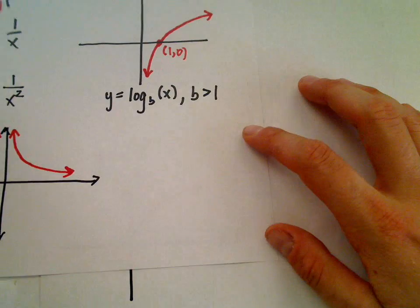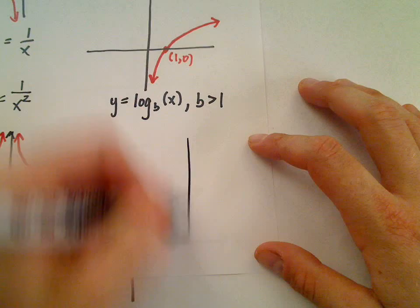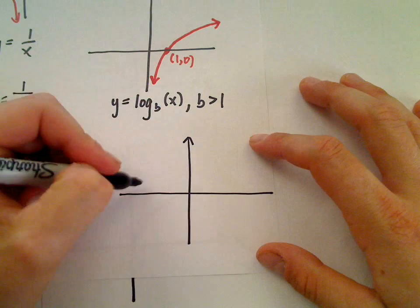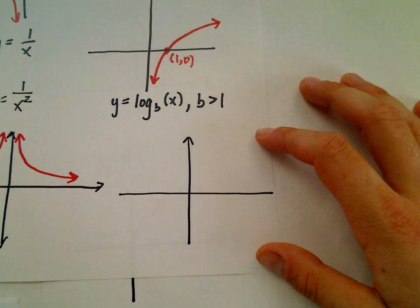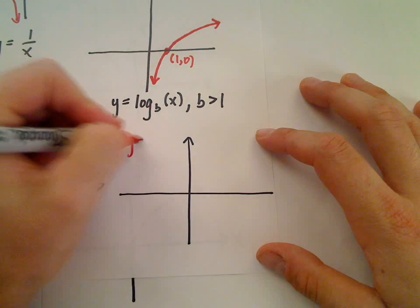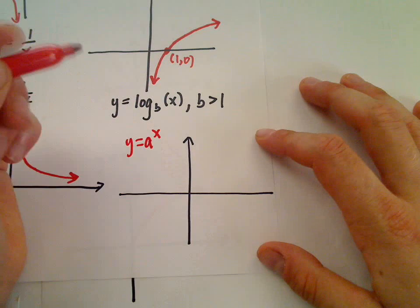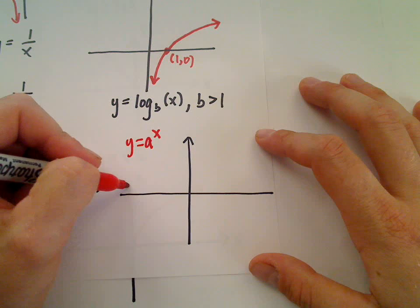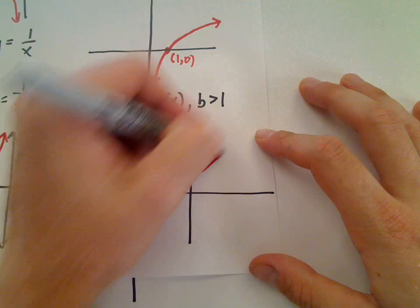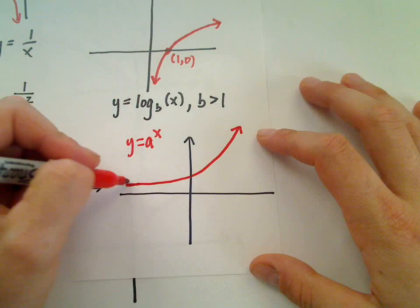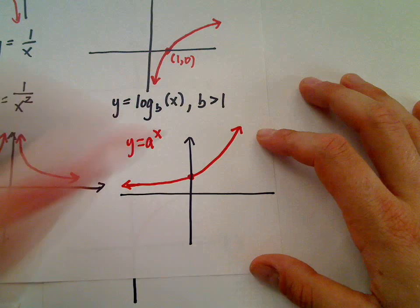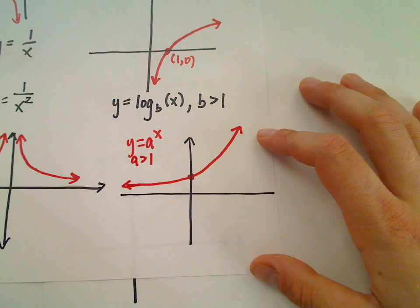Last but not least, maybe we can squeeze in our exponential functions. Remember, an exponential function is of the form y equals a to the x. If the base a is bigger than 1, the function will increase as you move left to right. So there's our basic exponential if our base is bigger than 1.